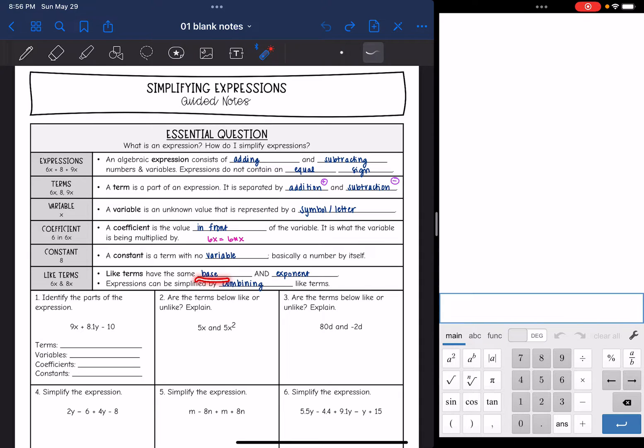Like terms have the same base and the same exponent. So something like X and X squared would not be like terms because they have different exponents. And then expressions can be simplified by combining like terms. So let's look at a few problems.